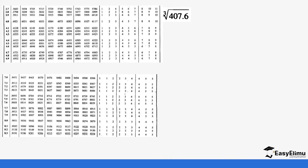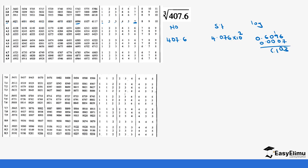Let's do another question. We have the cube root of 407.6. We get the number in standard form and log. The number is 407.6; standard form will be 4.076 times 10 power 2. Looking up 4.076 in the log table gives us 0.6096. Adding the difference column for 6 gives plus 0.0007, which gives us 0.6103. We have a characteristic of 2, so this becomes 2.6103.